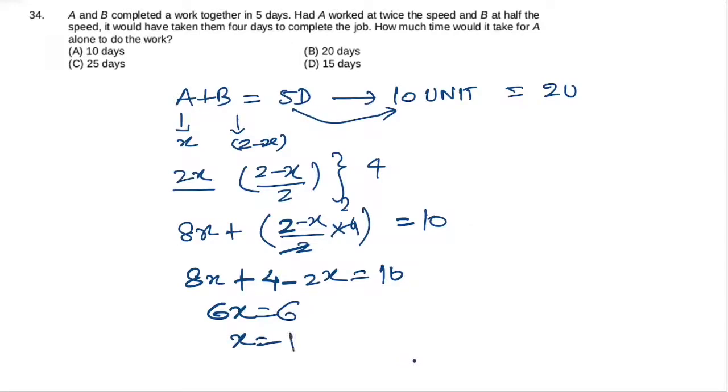If A alone works at efficiency 1, to complete the total 10 units of work, it will take 10 days. Simply, our answer is option A. Thanks for watching the video.